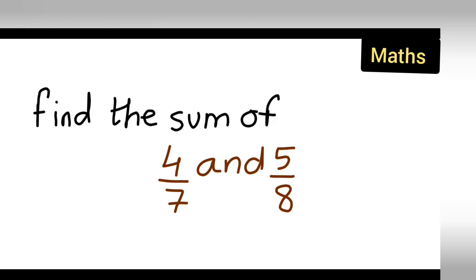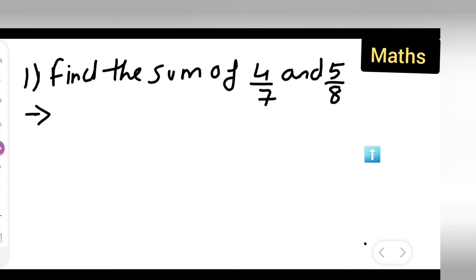So basically here the denominator is different. So let us see what happens when the denominators are different, how y'all are going to solve. First y'all can take down the question: find the sum of 4 upon 7 and 5 upon 8. Now let us find the sum of these two numbers.